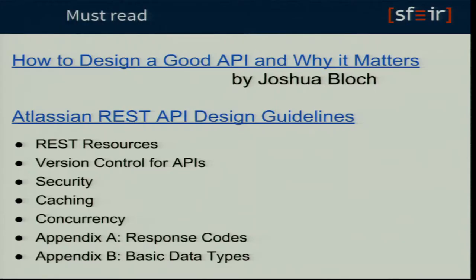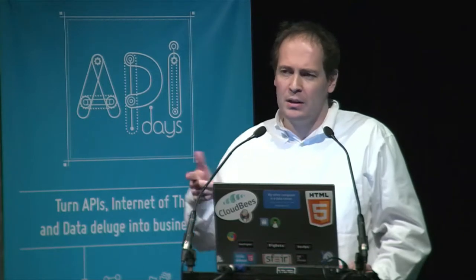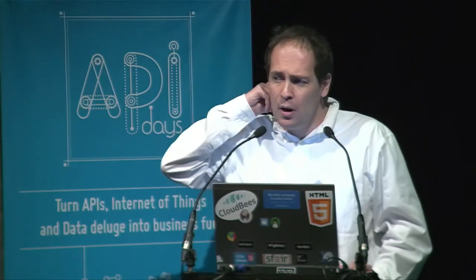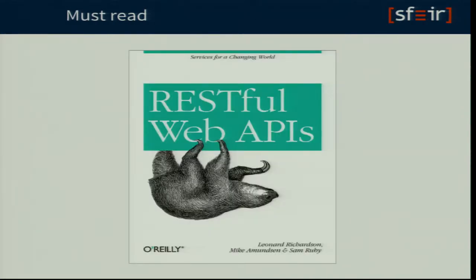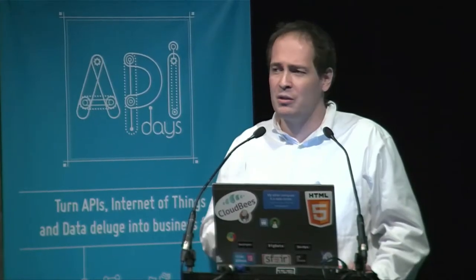Other good references you should read: 'How to Design a Good API and Why It Matters' by Joshua Bloch — it's more about library APIs, but still has fundamental information. Atlassian, the guys behind Confluence and Jira, have pretty good guidelines — a good start when you want to design your API. And last but not least, 'RESTful Web APIs' — I believe Mike Amundsen is at the conference. It's the second edition; the first was called 'RESTful Web Services.' You must read this if you are designing or building a web API.